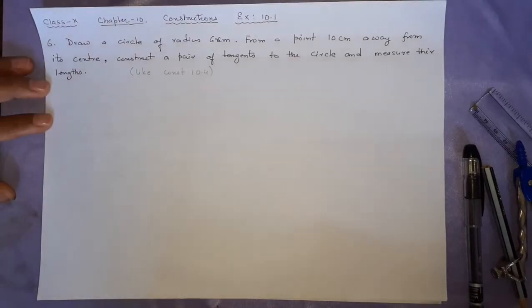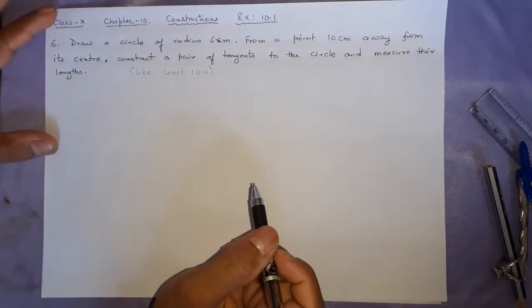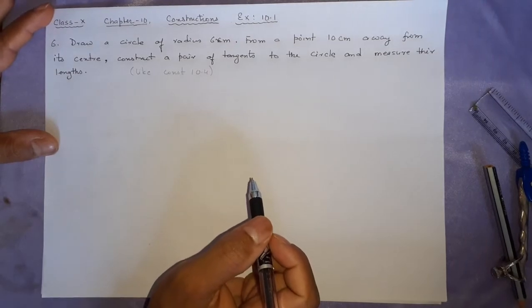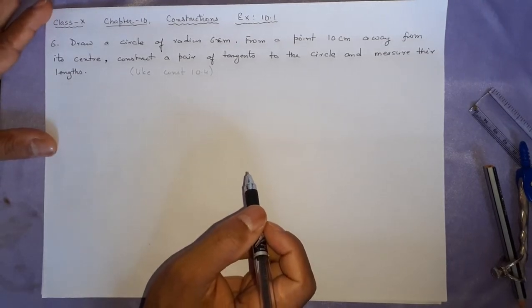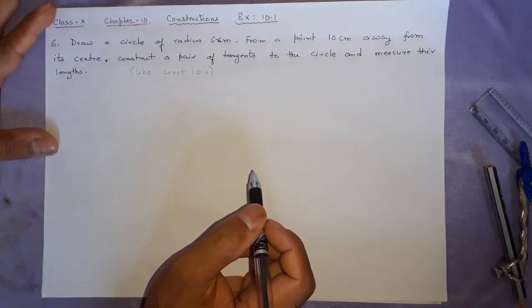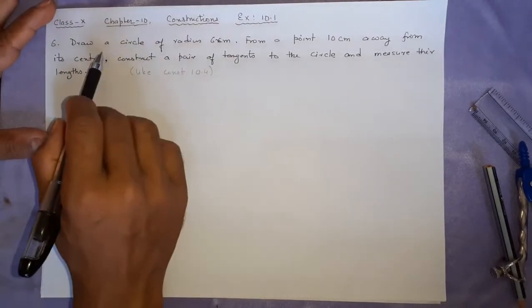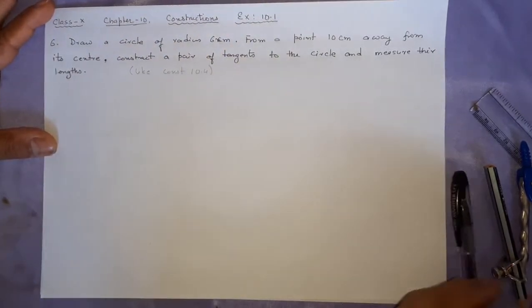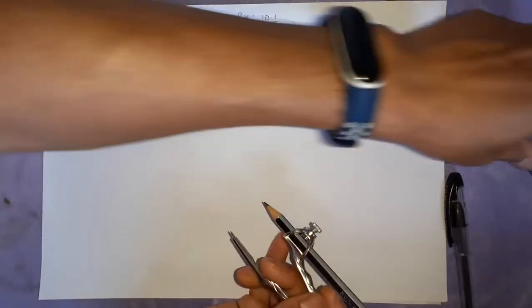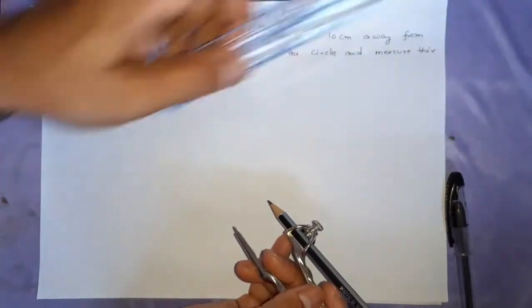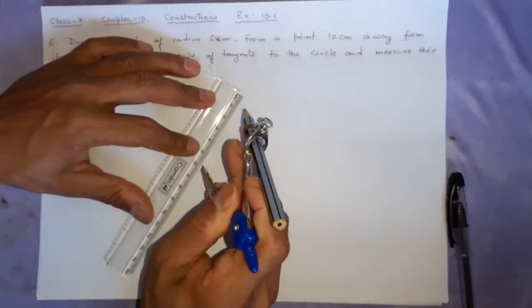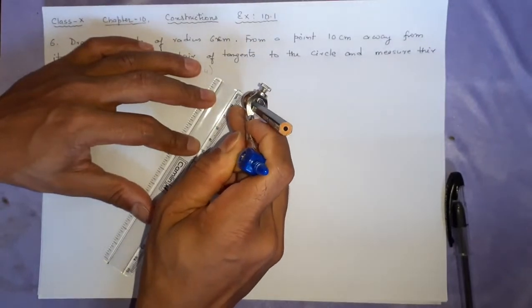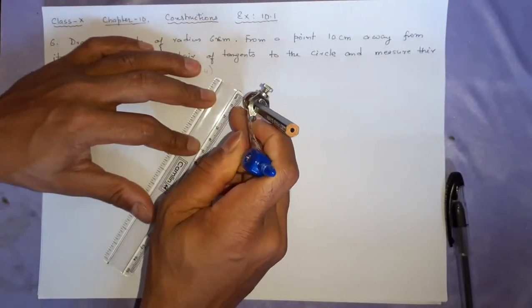Welcome viewers, this is question number 6, chapter 10, name of the chapter is constructions, exercise 10.1 of class 10, MBSC. Here, it is like construction 10.4, draw a circle of radius 6 cm. Let us make it, and after that you have to draw two tangents from a point outside the circle.